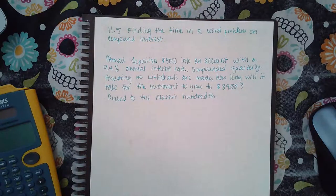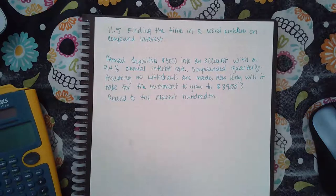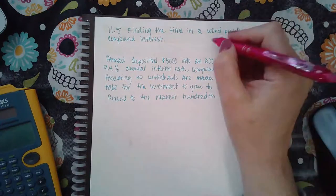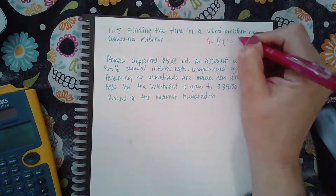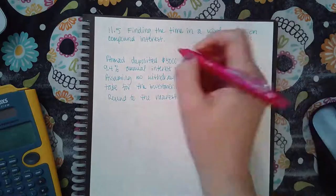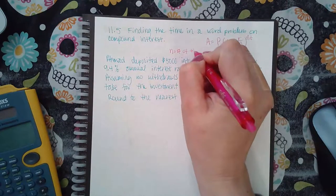Okay, here we have finding the time in a word problem on compound interest. So for compound interest, it's a different formula. It's A equals P times the quantity 1 plus R over N to the NT, where N equals the number of times compounded in one year.